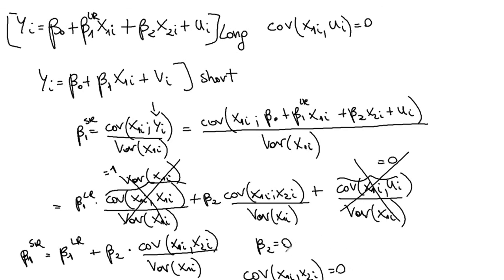What do these conditions mean? If beta 2 equals 0, it means x2 is irrelevant for explaining y, so it's fine to omit it. The other case is when x1 and x2 have a covariance of 0 — they are uncorrelated. In that case, it's okay to omit x2 when estimating the effect of x1 on y, because if x1 and x2 are completely uncorrelated, x2 moving with x1 won't affect y. These are the two conditions guaranteeing that omitting x2 won't cause inconsistency in estimating beta 1.